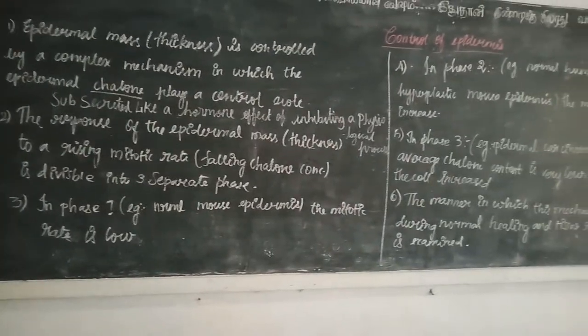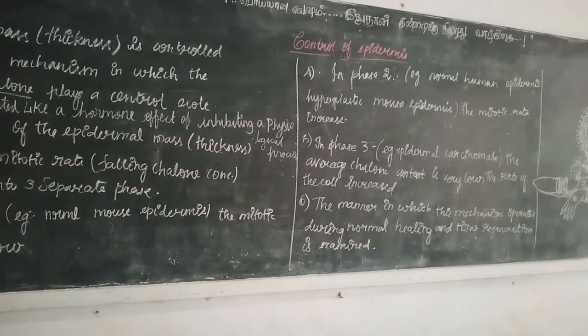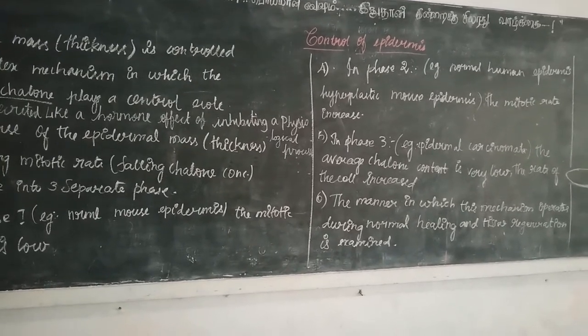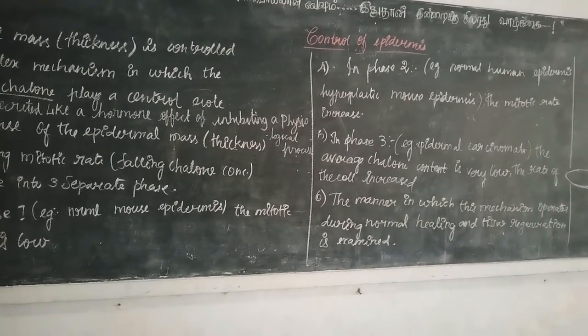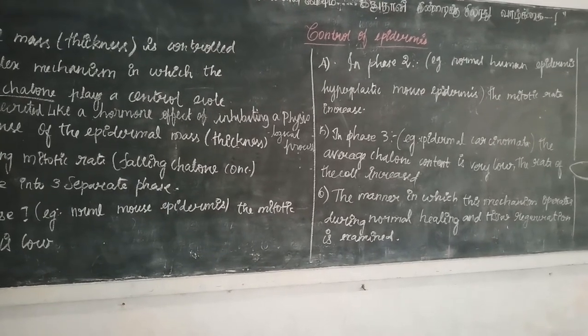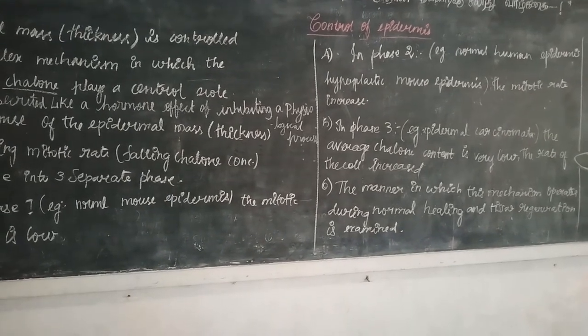Next in phase 2, normal human epidermis or hypoplastic mouse epidermis, the mitotic rate has increased beyond the point at which all the basal cells have entered the mitotic cycle. After the first phase, the mitotic cells are entered into the basal cell.